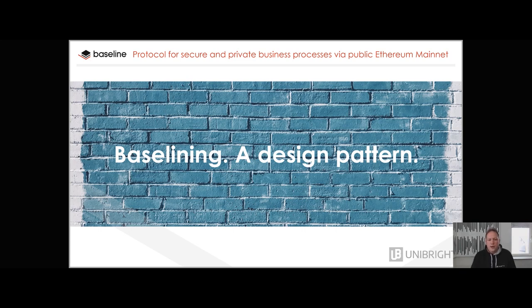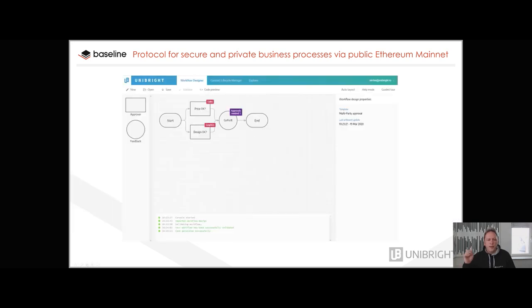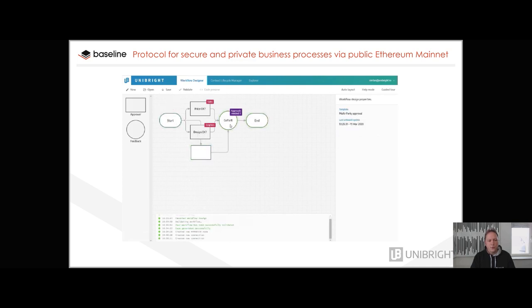Our tools to do so include, for example, the Unibright workflow designer where you can define that use case visually, and then you get the code generated for any smart contract language or any blockchain available. The idea behind it is to have a little less complexity — not requiring too much knowledge from a specific coder, but rather using the knowledge of the domain specialist who knows how the approval process should look, rather than knowing how to code it.